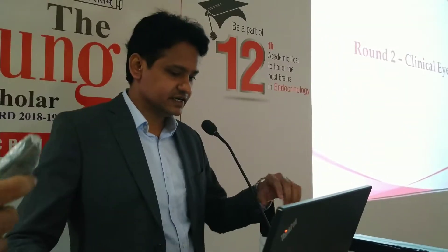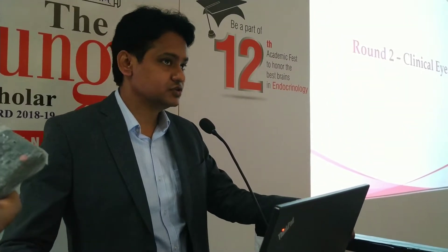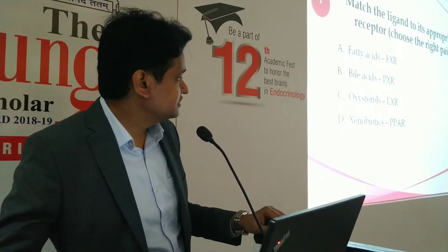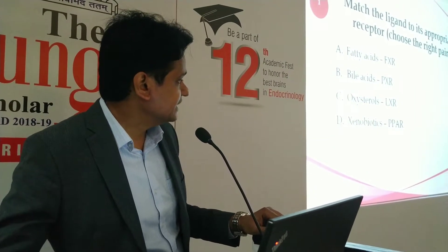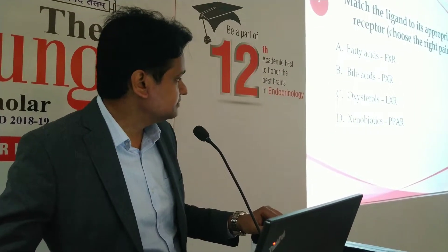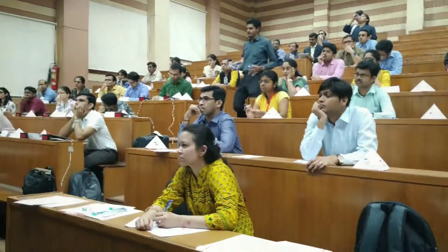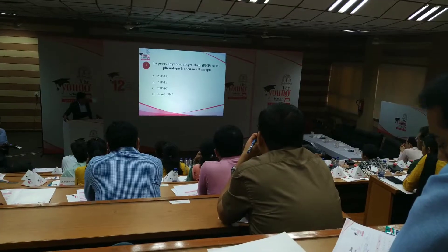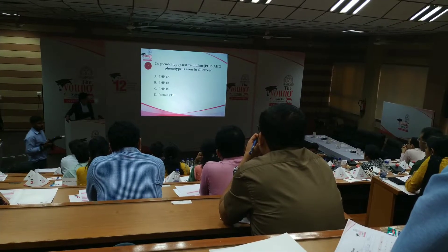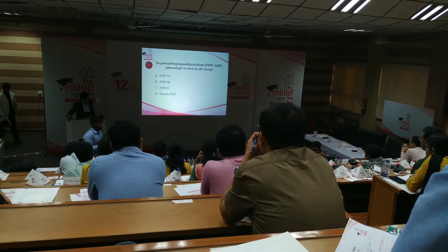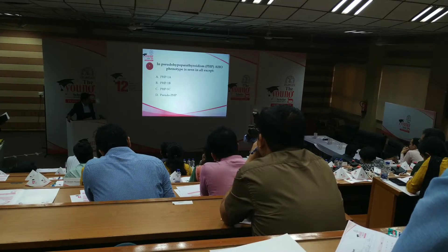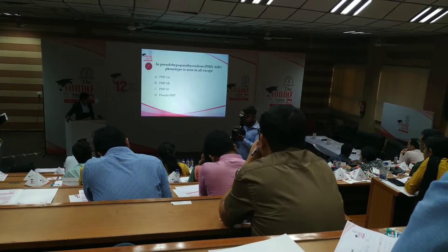That is clinical eye. The first question is: Satiation with FxR, VxR — Officer of Alexa — or the AHO phenotype is seen in, or except C, that is VHP1, CA, or it is B, shadow VHP.